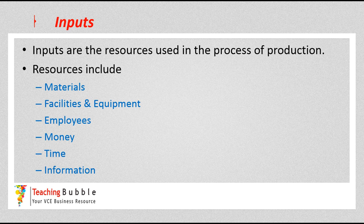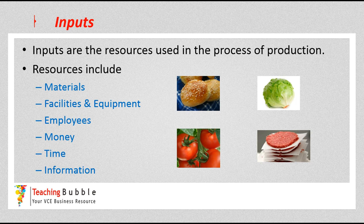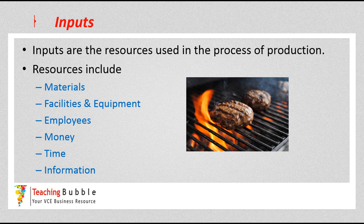Starting with inputs — they're the resources used in the process of production. They can include materials; if we think back to an earlier video about making hamburgers, some of the materials involved were the buns, the lettuce, the tomato, and the meat. Then there's facilities and equipment — the facility we're in, the seats and tables, the cash register, and obviously a grill to cook our burgers, even the knives and chopping boards. All of that enables us to produce a final product.